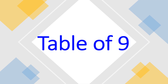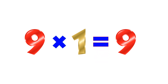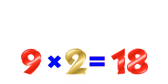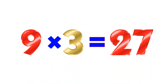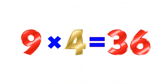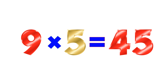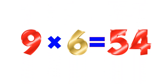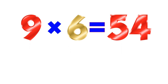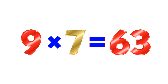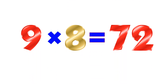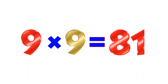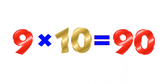Table of 9. 9×1=9. 9×2=18. 9×3=27. 9×4=36. 9×5=45. 9×6=54. 9×7=63. 9×8=72. 9×9=81. 9×10=90.